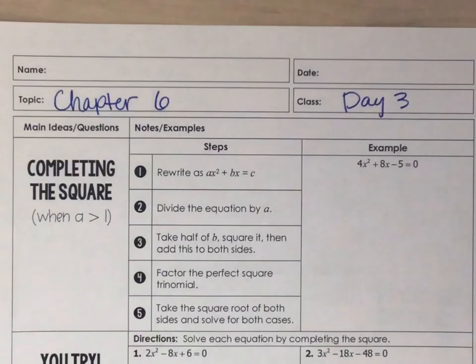Step 2 says that we're going to divide the equation by whatever our a is. So every number gets divided by 4. So our new equation is x squared plus 2x, and that equals 5 over 4. I can't simplify that, so it's just going to stay as 5 over 4.